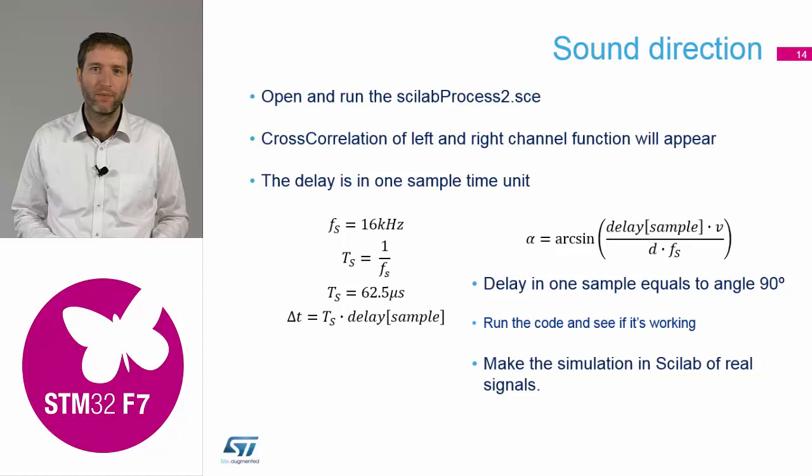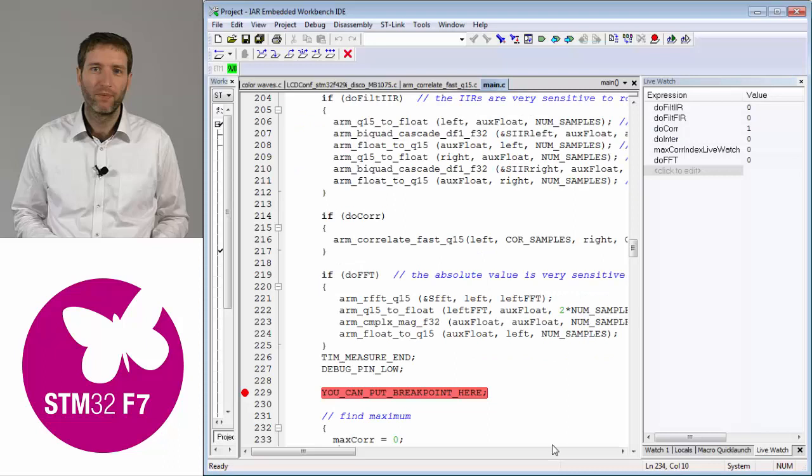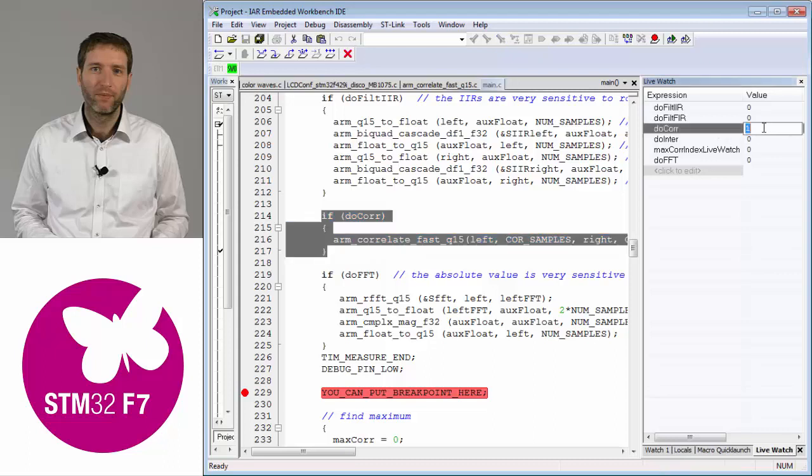Briefly: two operations—cross correlation and maximum find. We can run it now in the STM32. Our demo is based on a few flags in the main loop. After extraction of the left and right signals, we're checking these flags and doing something. These flags are also visible in the live watch window, so you can change the behavior of the software without recompiling it. Out of the box, you should get the do correlation flag set to one and the others set to zero.